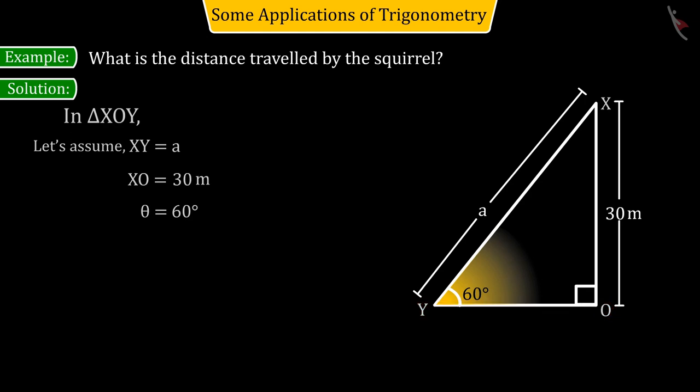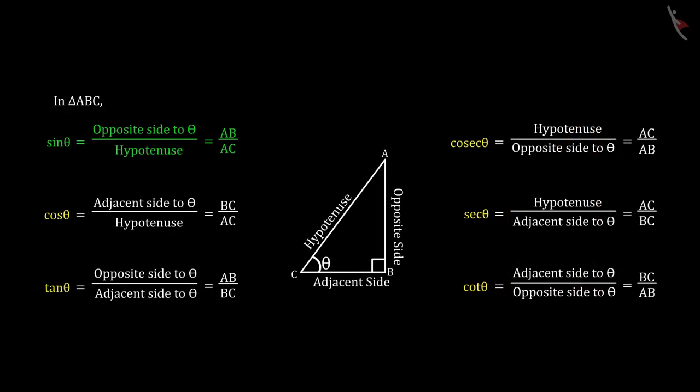To move further, if you use trigonometric ratio in right-angled triangle, then from the given information, can you tell which ratio would be suitable here?